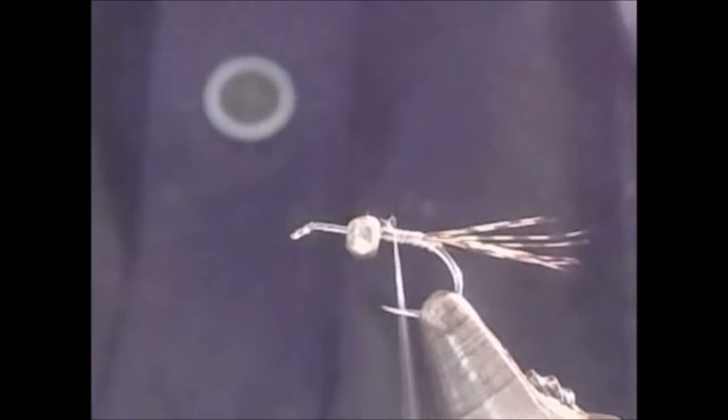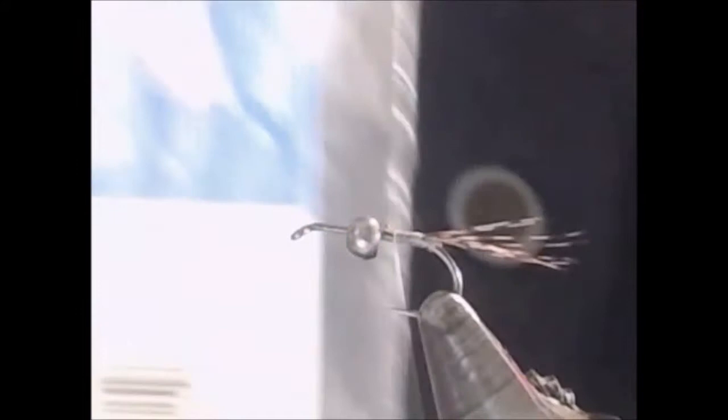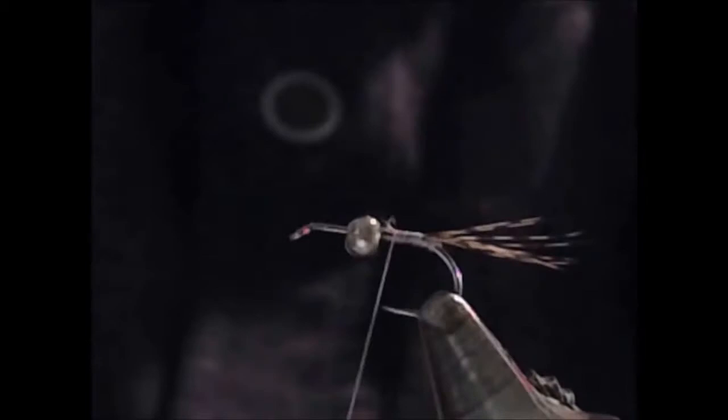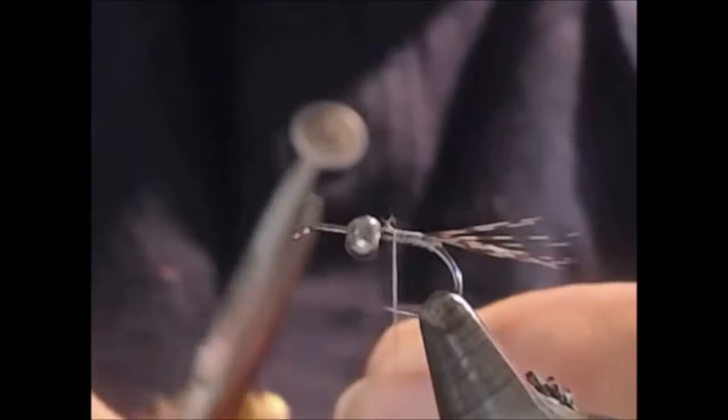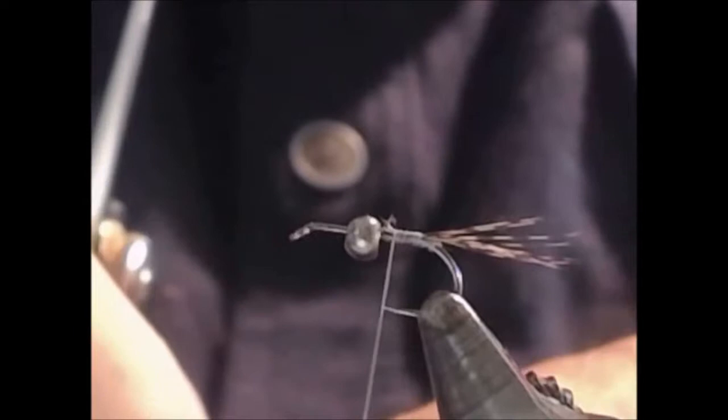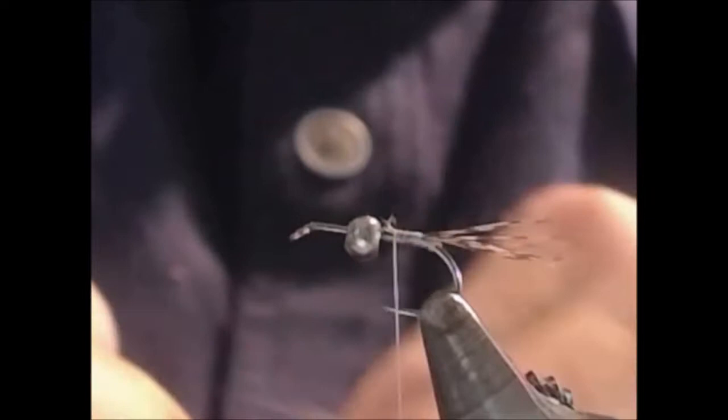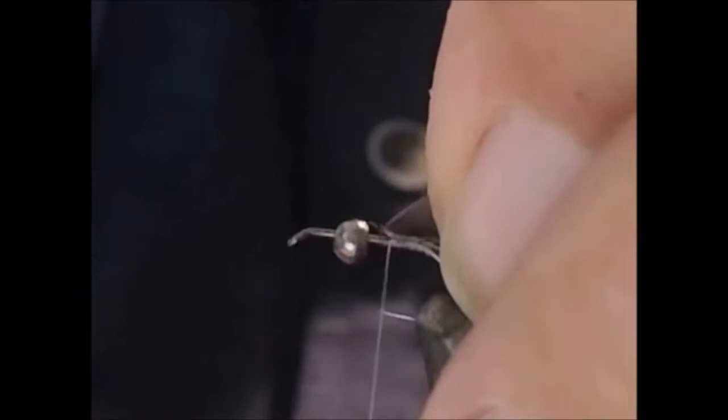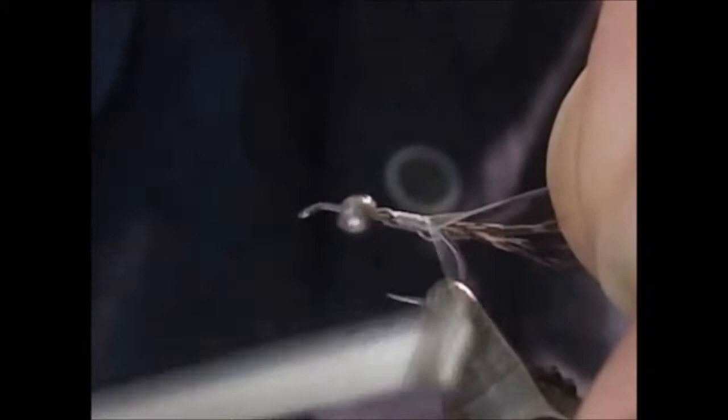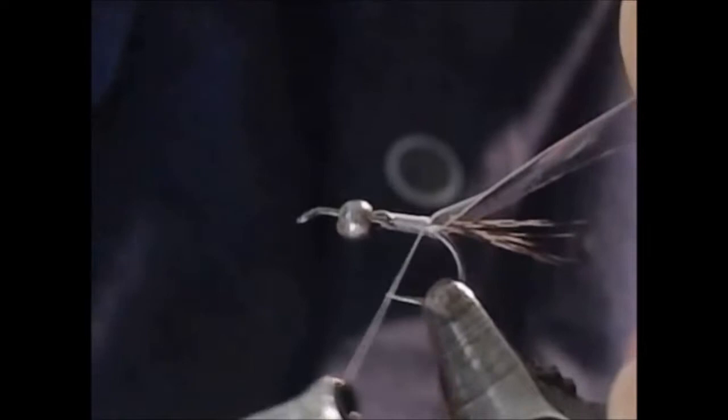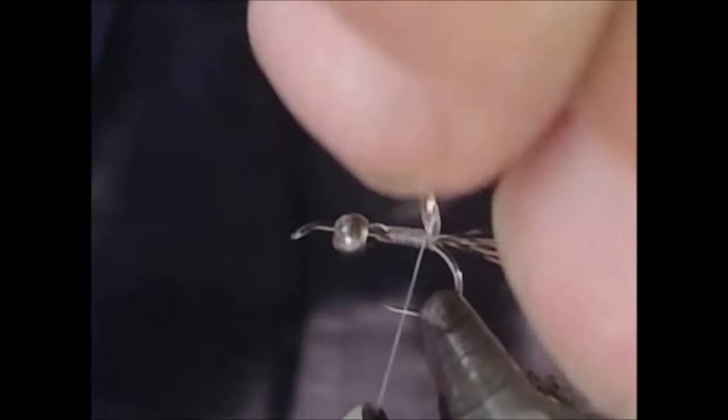For the shell of the fly, I'm going to be using some thin skin, this is clear. I'm going to take the thin skin and one side I'm going to clip an arrow or a point. This will help me capture the material. I'm going to put it right on top of the shank and we'll capture it in place.